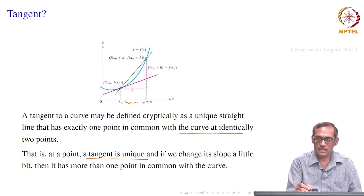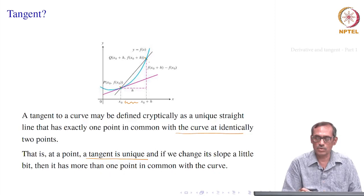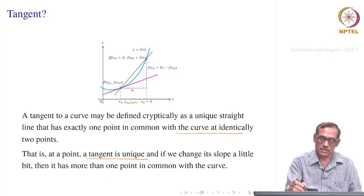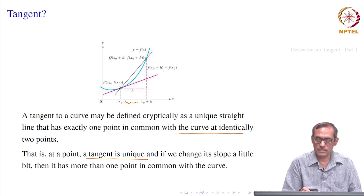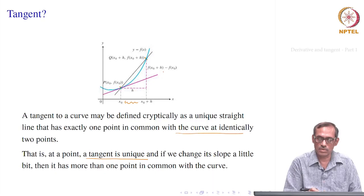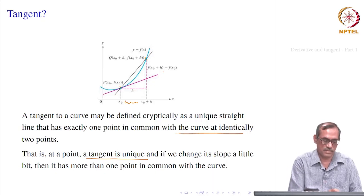We have the secant — the straight line joining P and Q. Our idea is that when h goes to 0, this secant becomes the tangent. That will be our working notion of tangent to a curve.